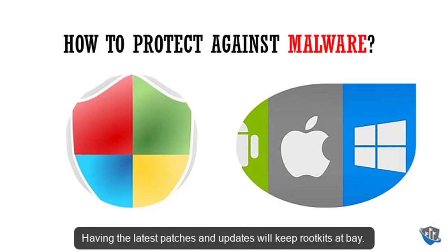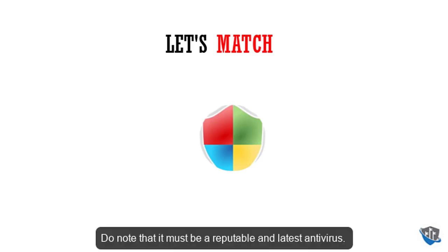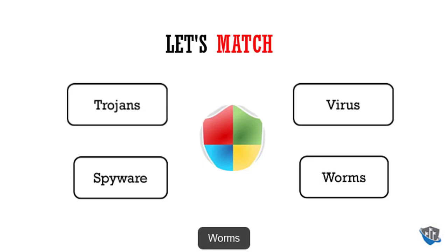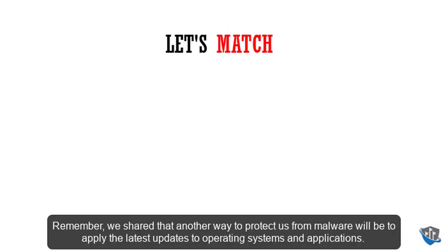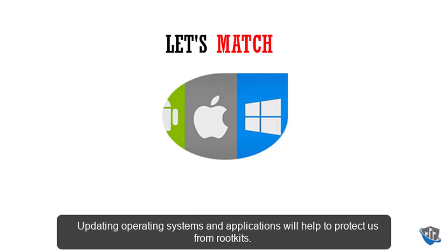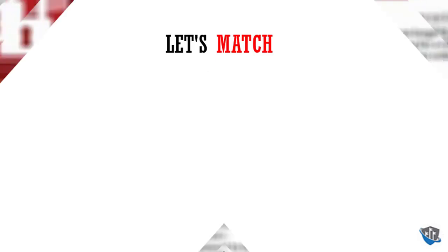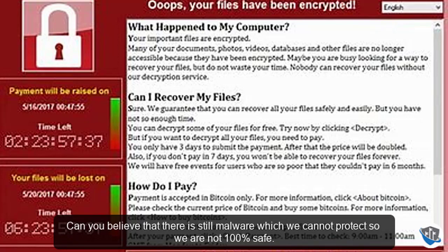Having the latest patches and updates will keep rootkits at bay. A reputable, up-to-date antivirus can protect against Trojans, viruses, spyware, and worms — four of the six malware types. Updating your operating system and applications adds protection against rootkits, bringing us to five of the six. The missing one is ransomware — meaning we are not 100% safe.